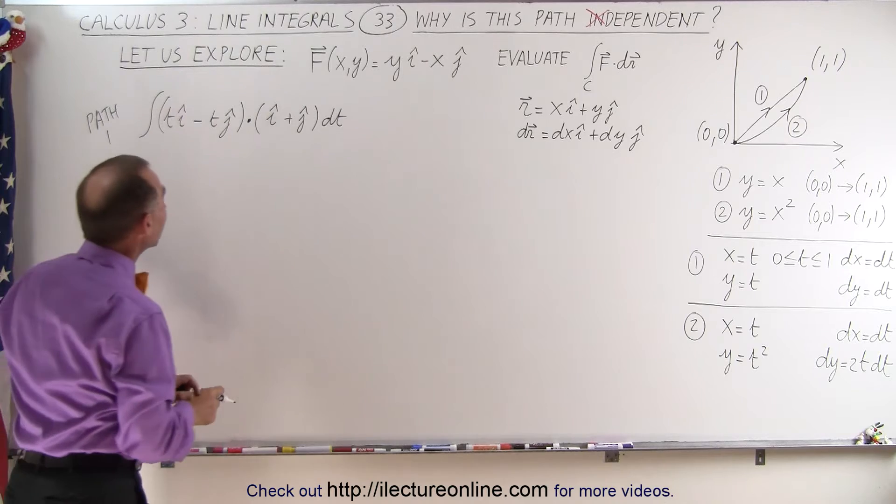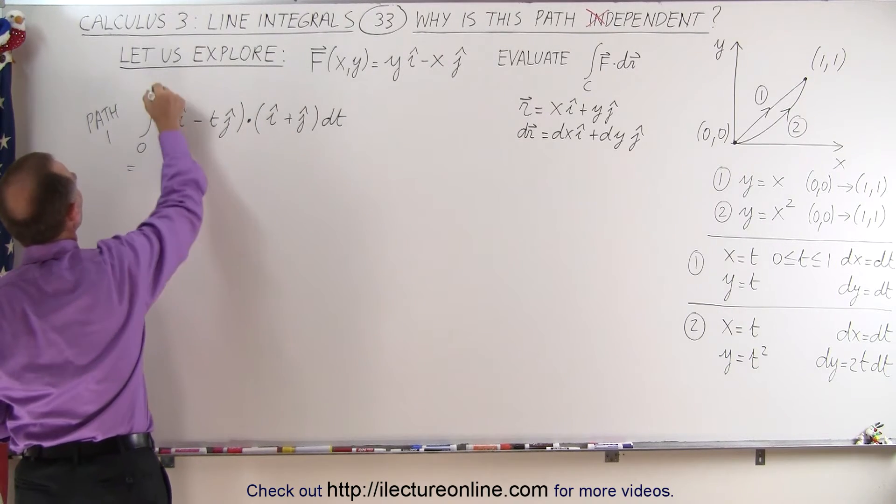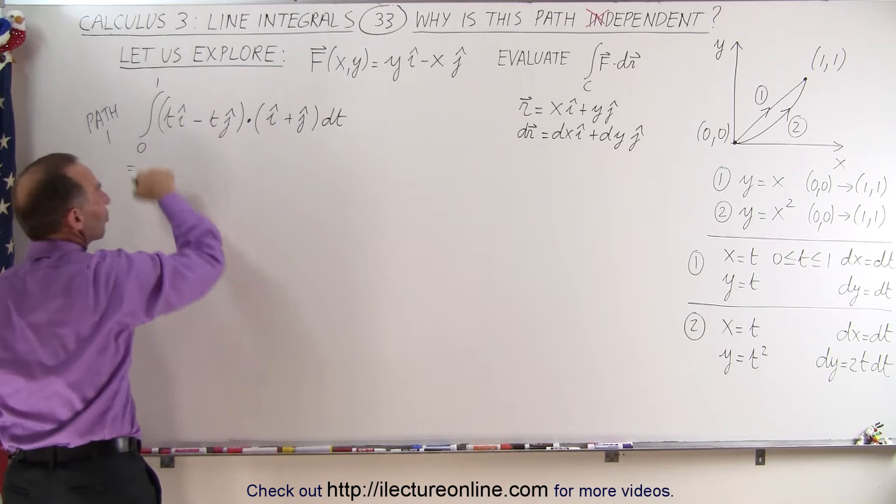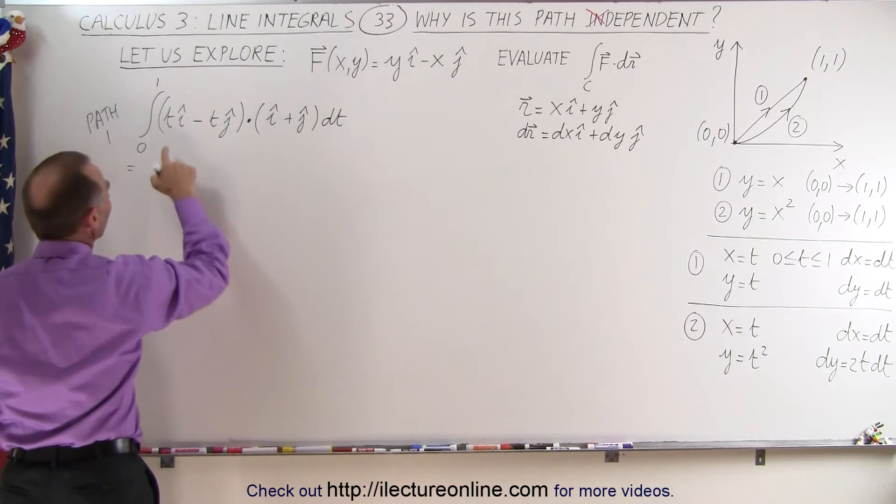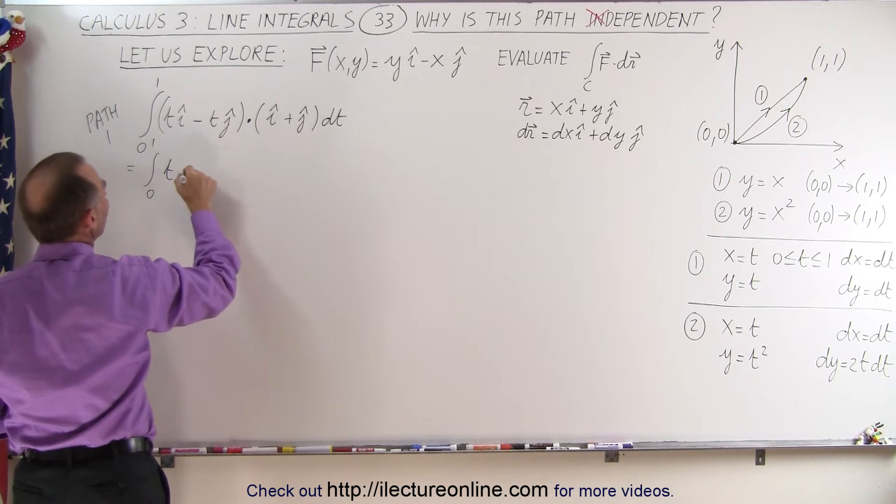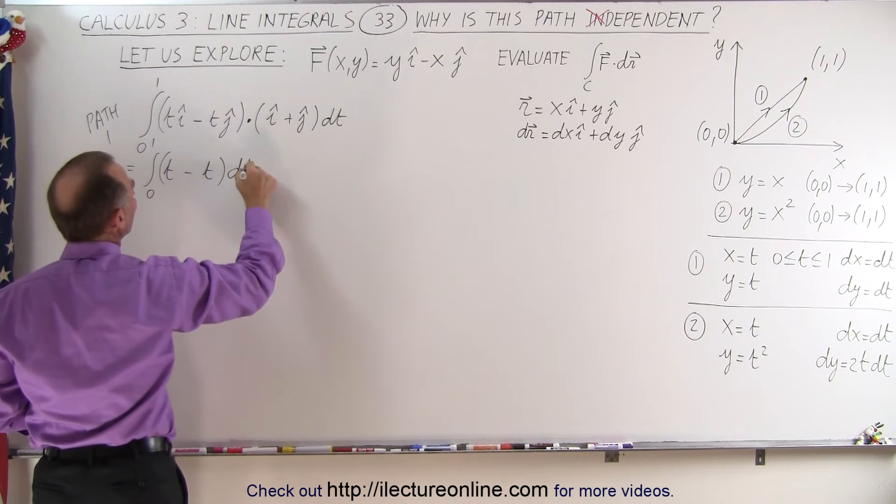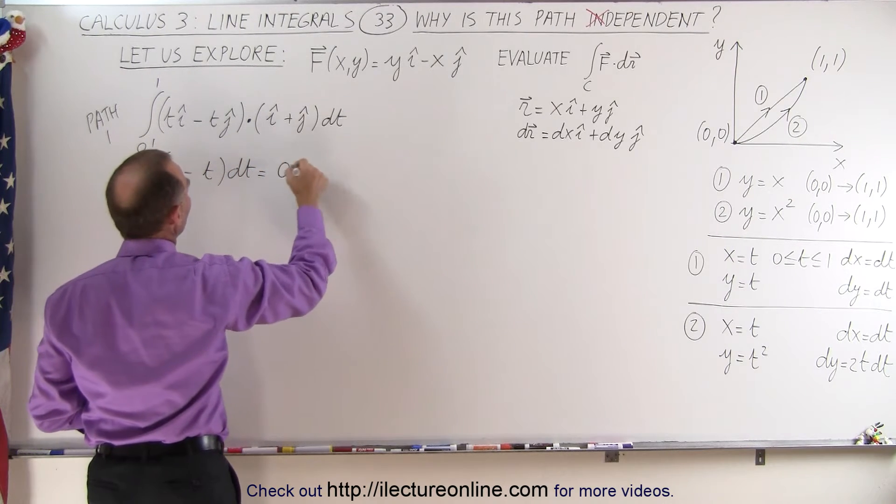So when we're going to integrate this, we first need to multiply this together. So this becomes equal to, and of course the limits of integration are the limits of t, and so this becomes 1 times t, so this is from 0 to 1. So this becomes t minus t times dt.